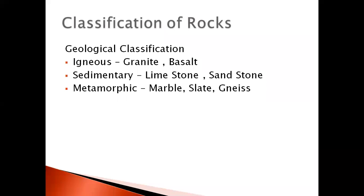Stone is a natural material we get from the breaking down of rocks. Rocks can be classified on three bases: the first is geological classification, the next is physical classification, and the third is chemical classification. Geological classification is based on the origin of the rock.